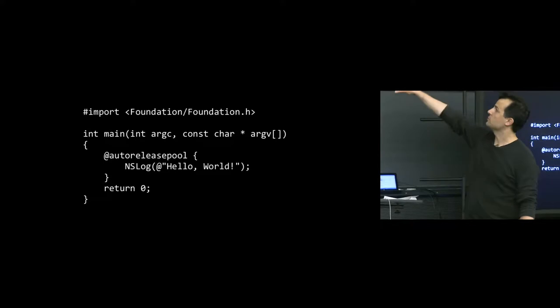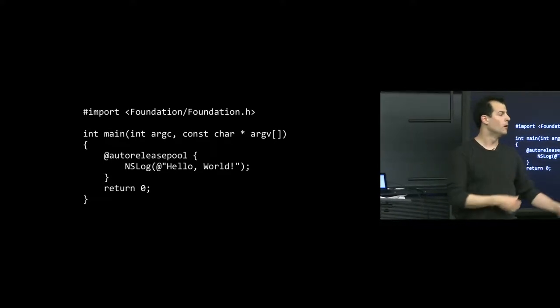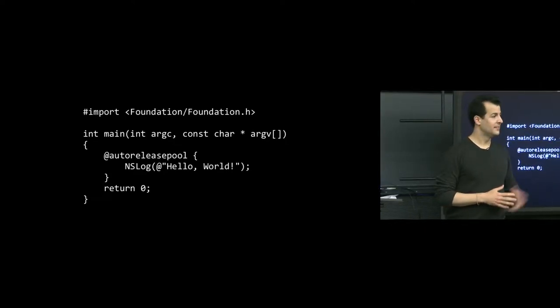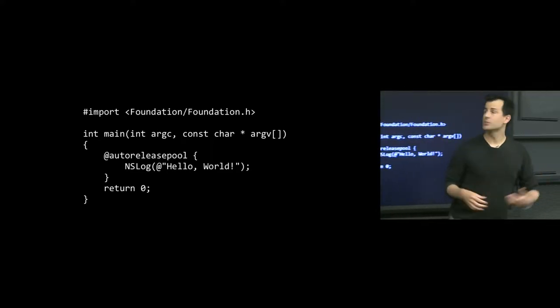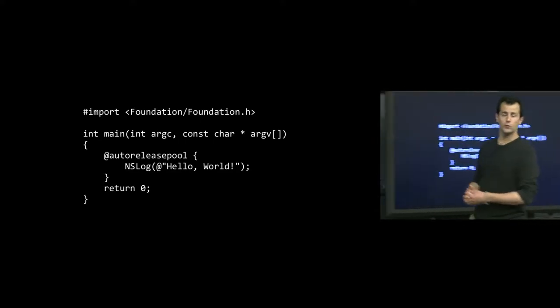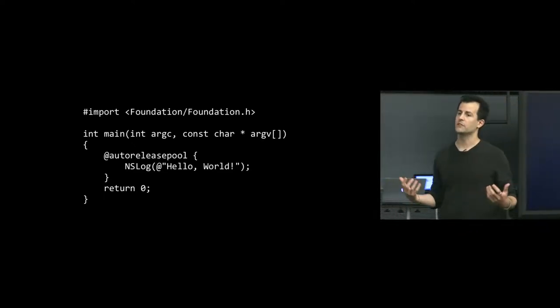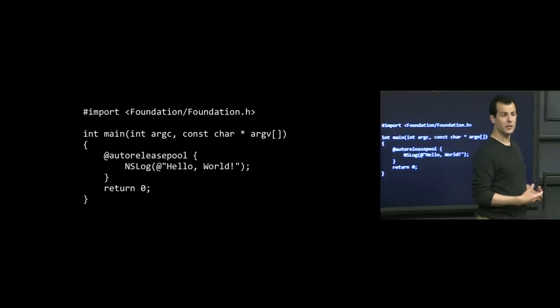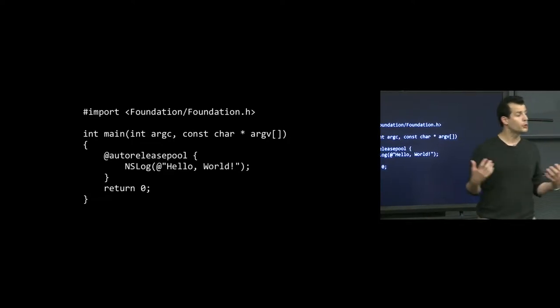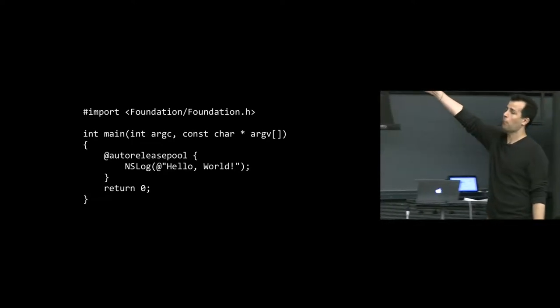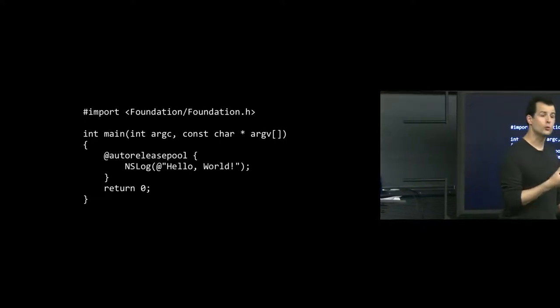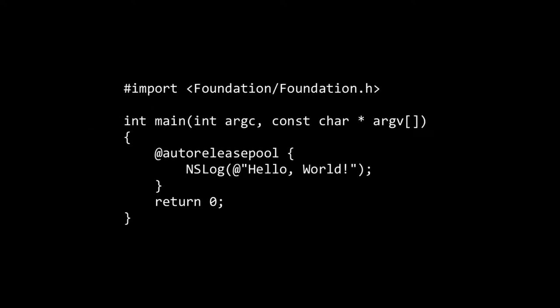Let's work through this line by line. Hash import — what does that do? It imports the library, specifically the Foundation library, which for Objective-C is all the basic stuff: things like arrays and other types of objects, similar to Java's collection classes or C++'s standard library. Hash import means those method declarations will be automatically loaded into this file so you can start using them even though someone else implemented those functions and classes.